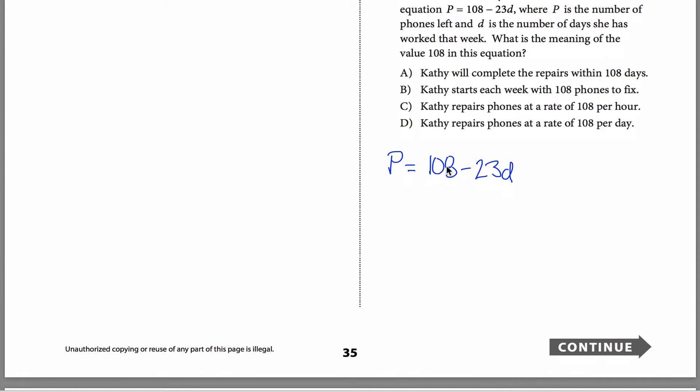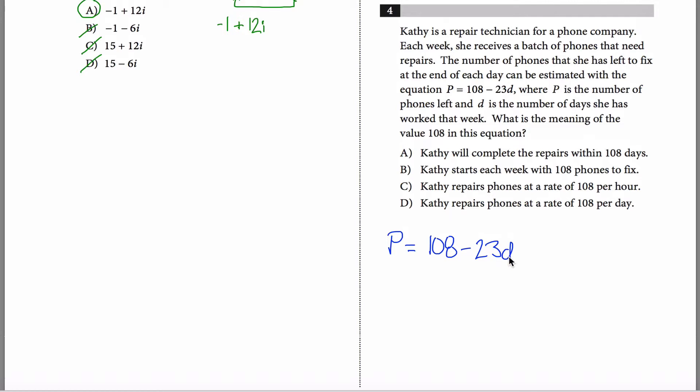What is the meaning of the value 108 in the equation? Well, I kind of already talked about that. The 108 is the amount of phones that she would have left to do when D equals zero. So let's see which of these statements in English correspond with that. Kathy will complete the repairs within 108 days. No, the 108 has something to do with phones, not has anything to do with days. So it's certainly not that. Kathy starts each week with 108 phones to fix. That sounds like a winner right there, right? She starts each week, meaning she's worked zero days that week. If she's worked zero days, she's got 108 phones to fix. That sounds good. Kathy repairs phones at a rate of 108 per hour? Absolutely not. Kathy repairs phones at a rate of 108 per day. That one's close. She repairs phones at a rate of 23 per day. This 23 is similar to what they're giving you in part D. So you can imagine a different problem where it asks you for the meaning of the 23 and you would say that's the rate that she repairs phones each day, something like that. But that's not what they're asking for. What they're asking for is what the 108 means. And that is answer B.